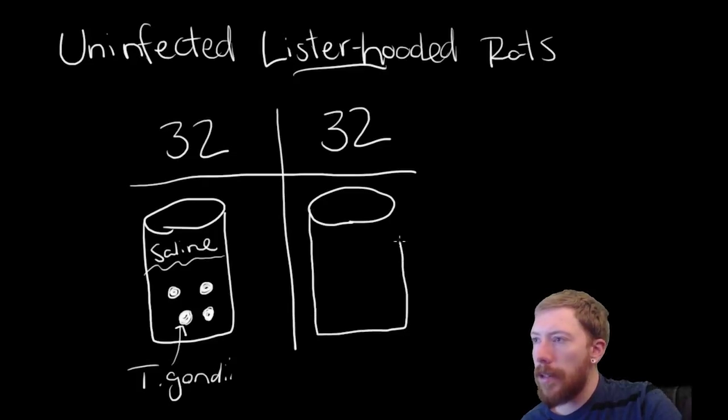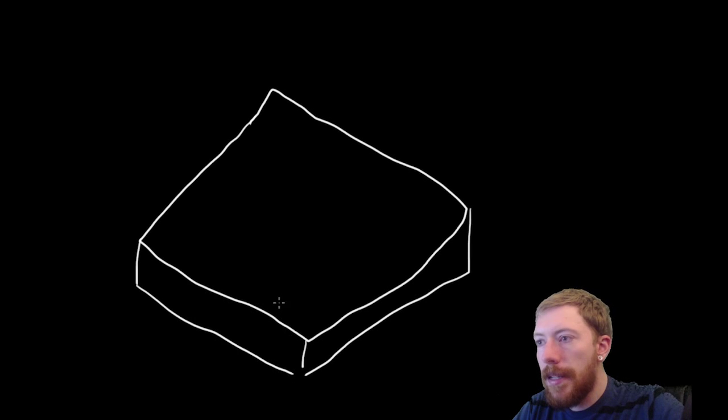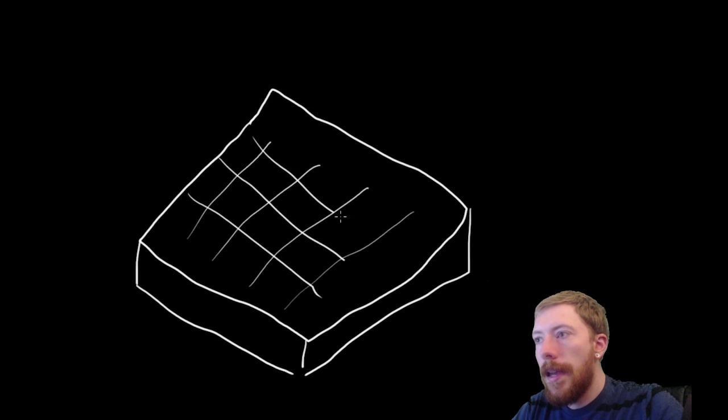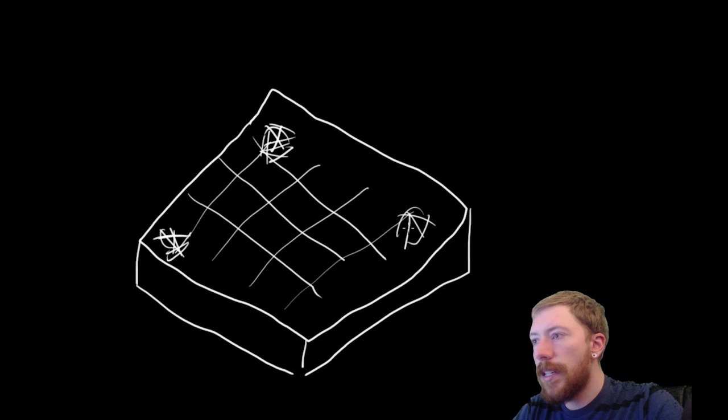And in their control group, this is the group that we're going to be making our comparisons to, they only give the rats saline, but not T. gondii. So, this is just saline, and so you have uninfected rats over here. So, then they take the rats and they place them in this box. And this box is divided up into different cells.